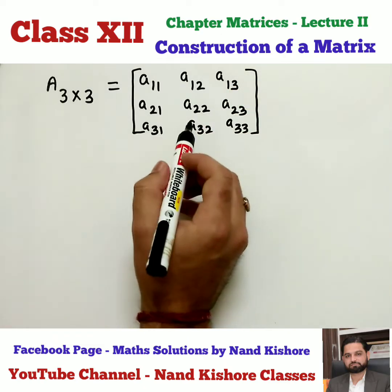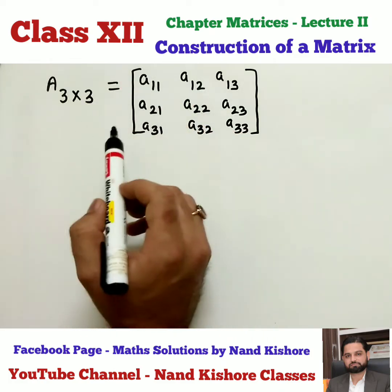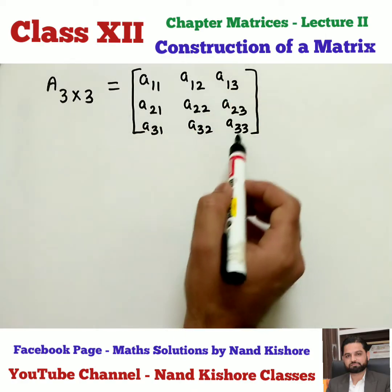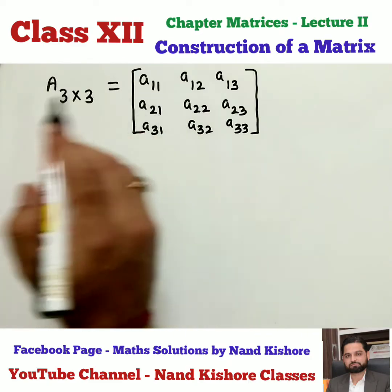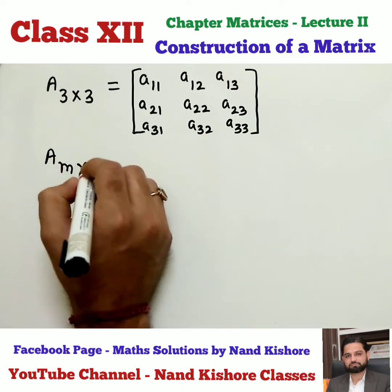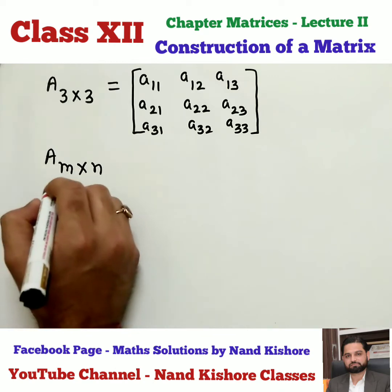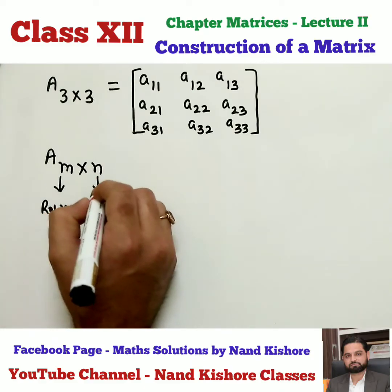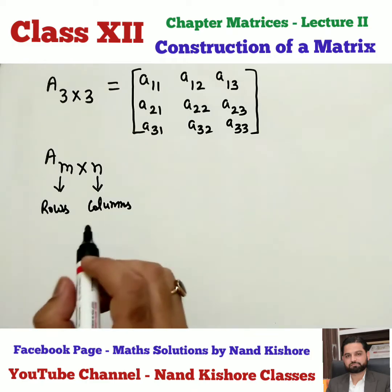We had learnt how to write it in our previous lecture. A11 means 1st row, 1st column. Same way, A23 means 2nd row, 3rd column. So today, what we are going to learn is how to write an M by N matrix, where M is number of rows and N is number of columns. General matrix we are going to learn.